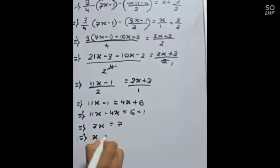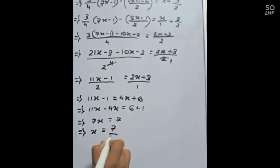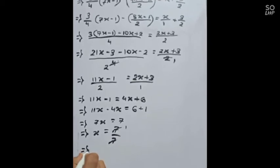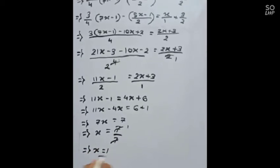So it will become x equals to 7 by 7. We will cut 7. It will become 1. So x equals to 1. And this is our final answer. Thank you.